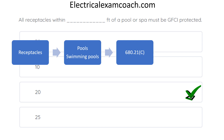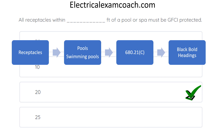We're in the right section, so we start reading the black bold headings to pull out keywords. We see 'circulation systems,' then 'other receptacles' — a keyword — and then 'GFCI protection' in a black bold heading. We read that paragraph and find, sure enough, 20 feet is the required distance. All receptacles within 20 feet of the pool or spa must be GFCI protected.